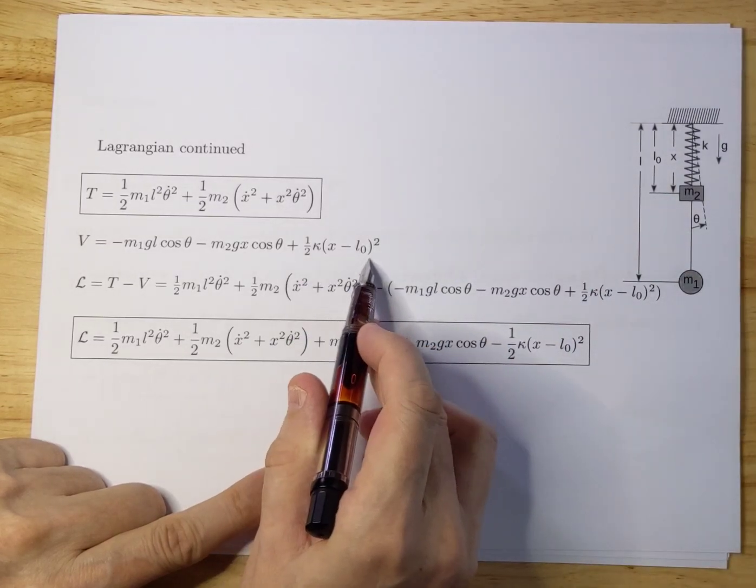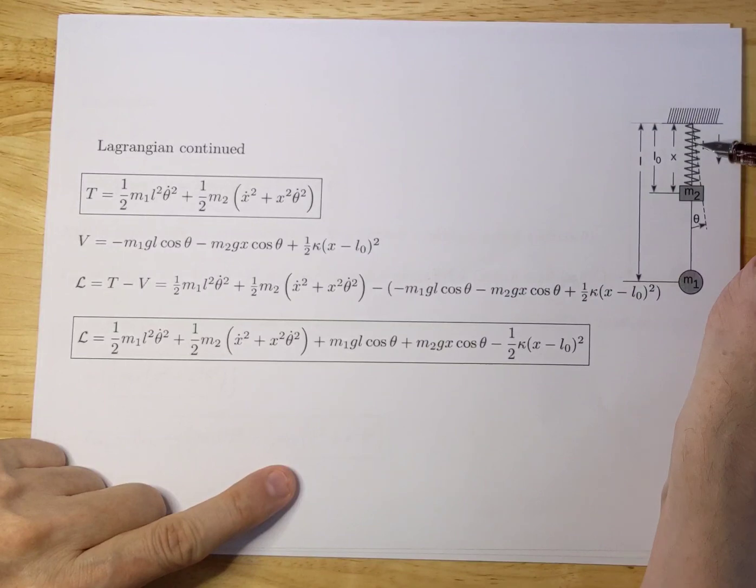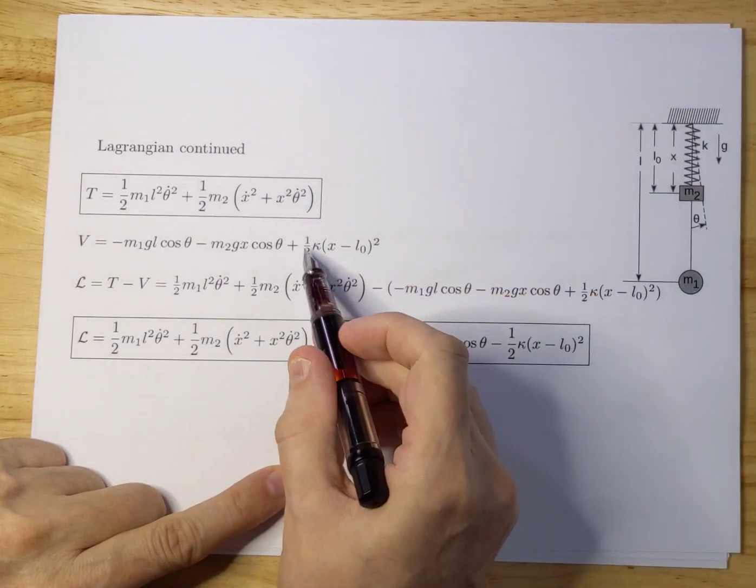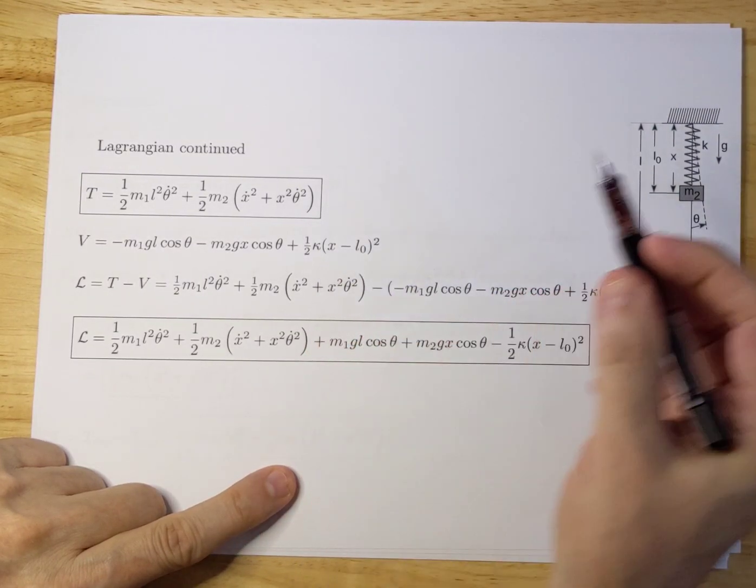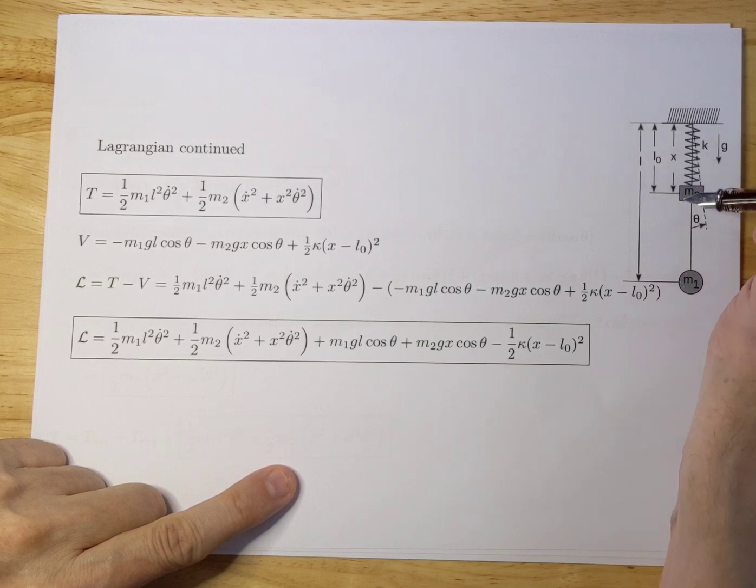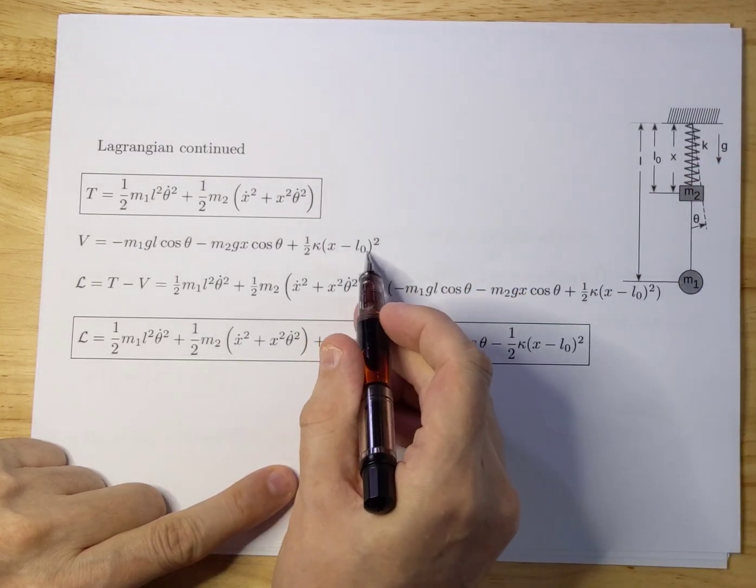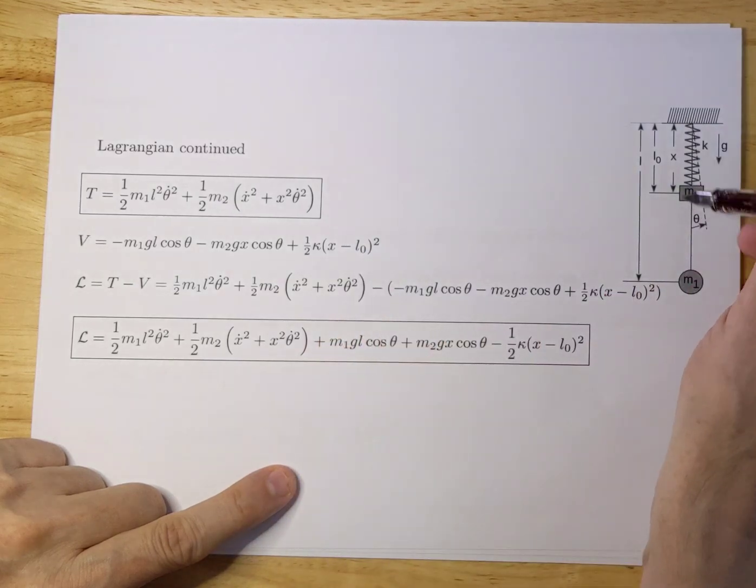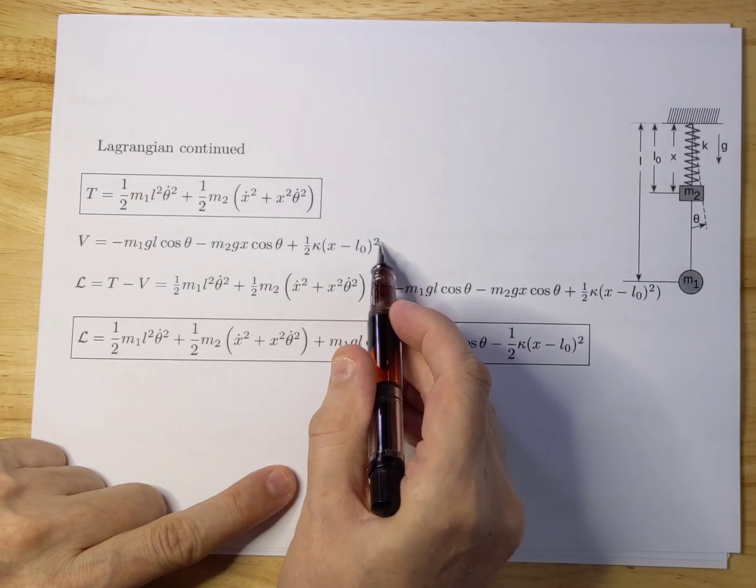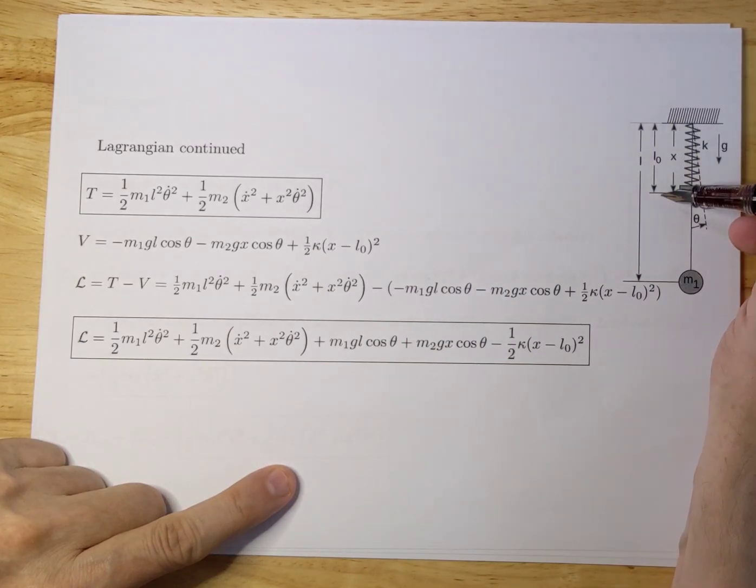According to Hooke's law there's a potential term with respect to the spring, which is half K X squared. X is really the differential of the length that's going to be induced by the system, so it's X minus L zero squared.